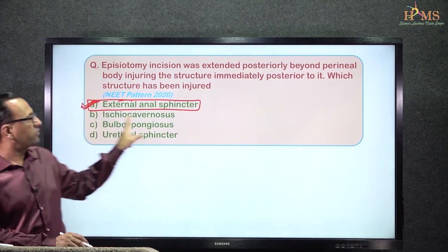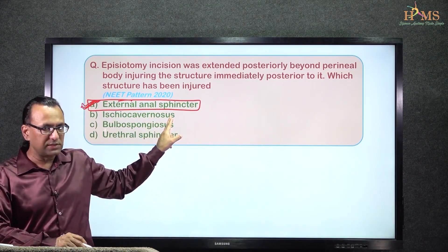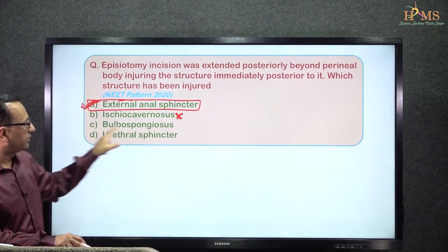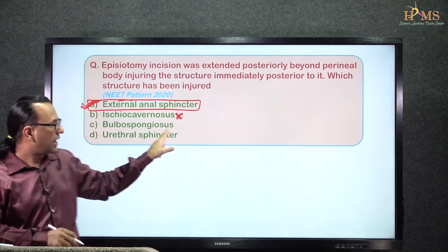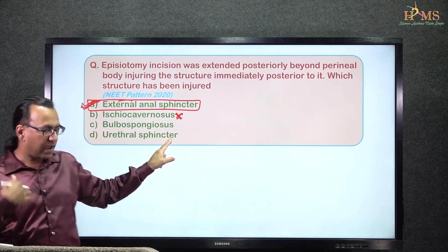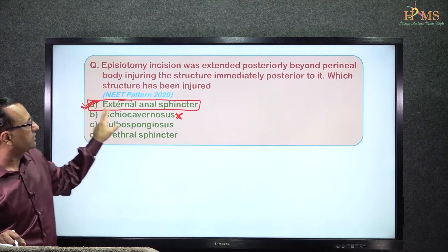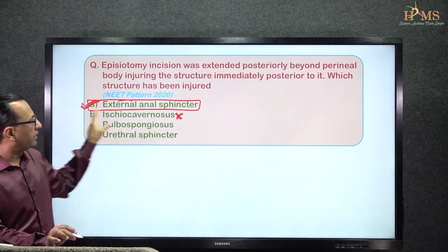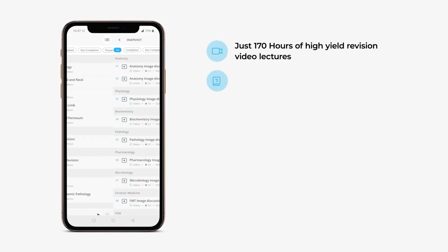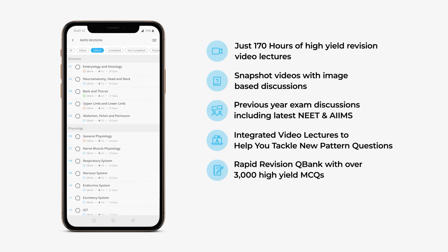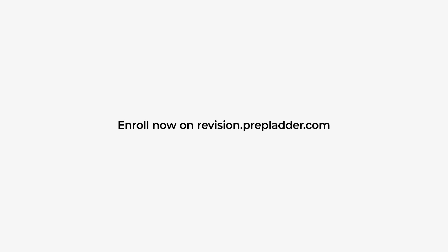Why external anal sphincter and not ischiocavernosus? Because ischiocavernosus is a lateral muscle — it is not inserted into the perineal body at all and is not behind it. Why not bulbospongiousus? It is in front of the perineal body, not behind. The external urethral sphincter is also in front of the perineal body, not behind. So who is immediately posterior to the perineal body? The external anal sphincter. Choice A should be our answer.